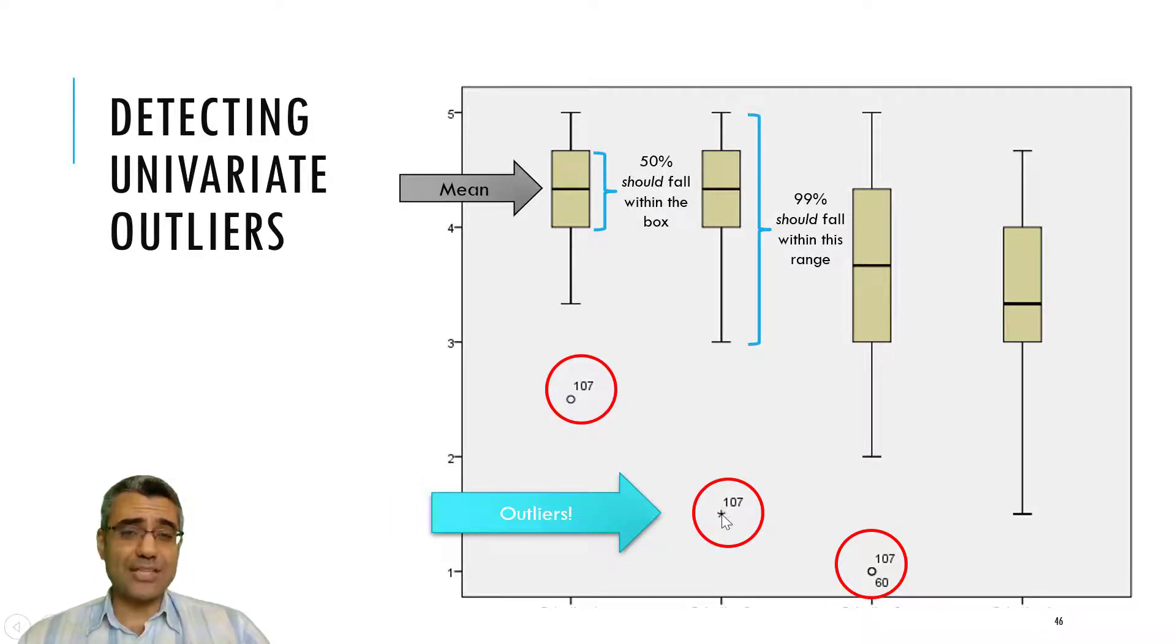And in this case, for example, those with asterisk, you should start with removing those cases. But here, as you can see, case number 107 has been repeated several times. So if I want to remove, I start with this case. It seems for most of the questions he gave, he's an outlier.